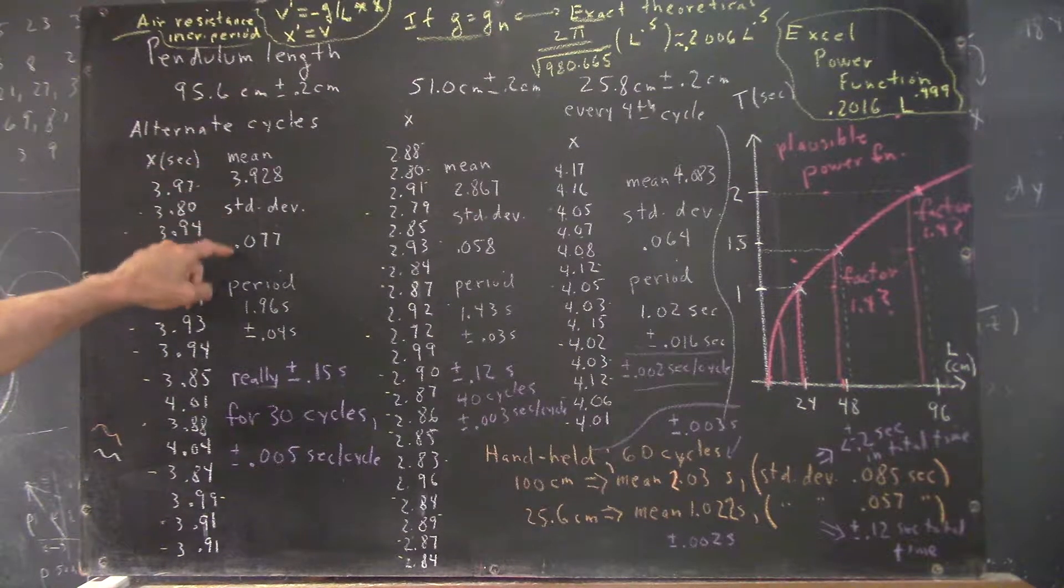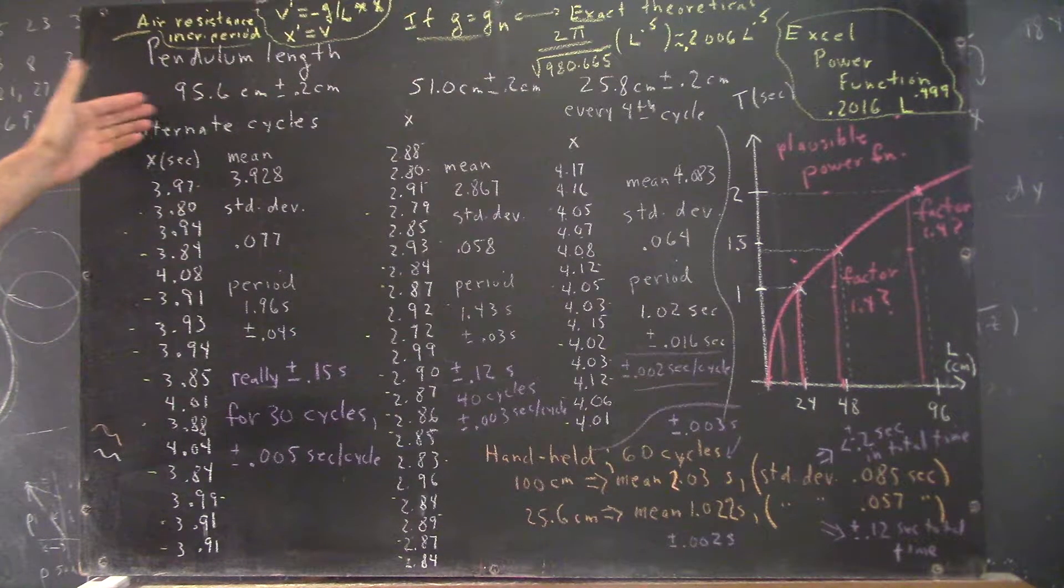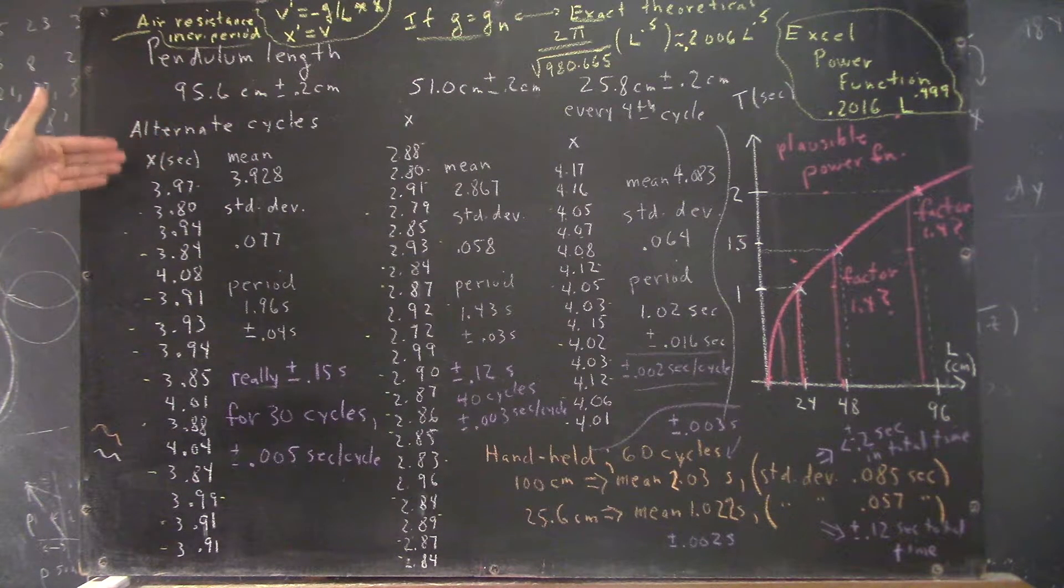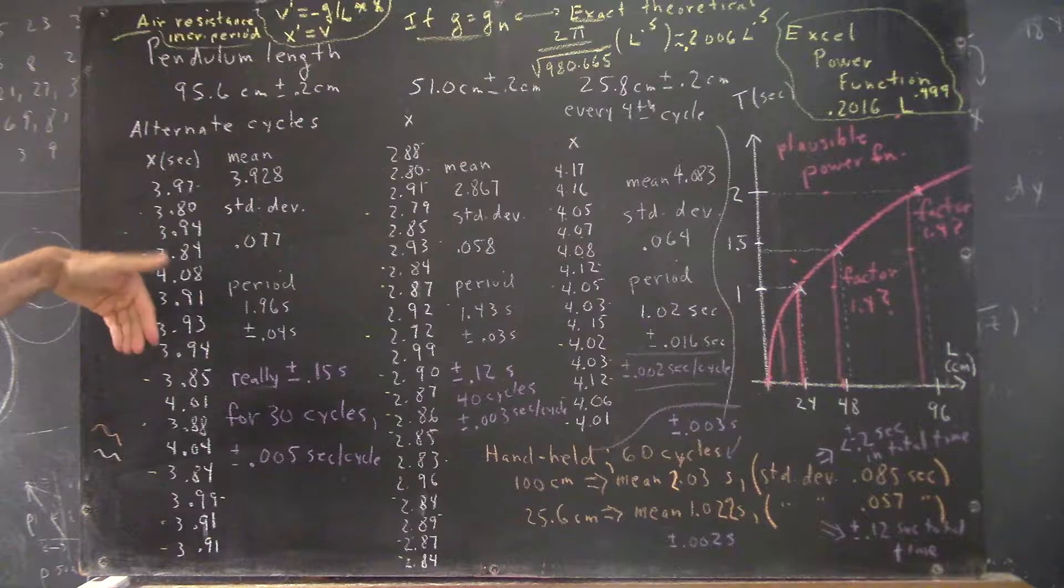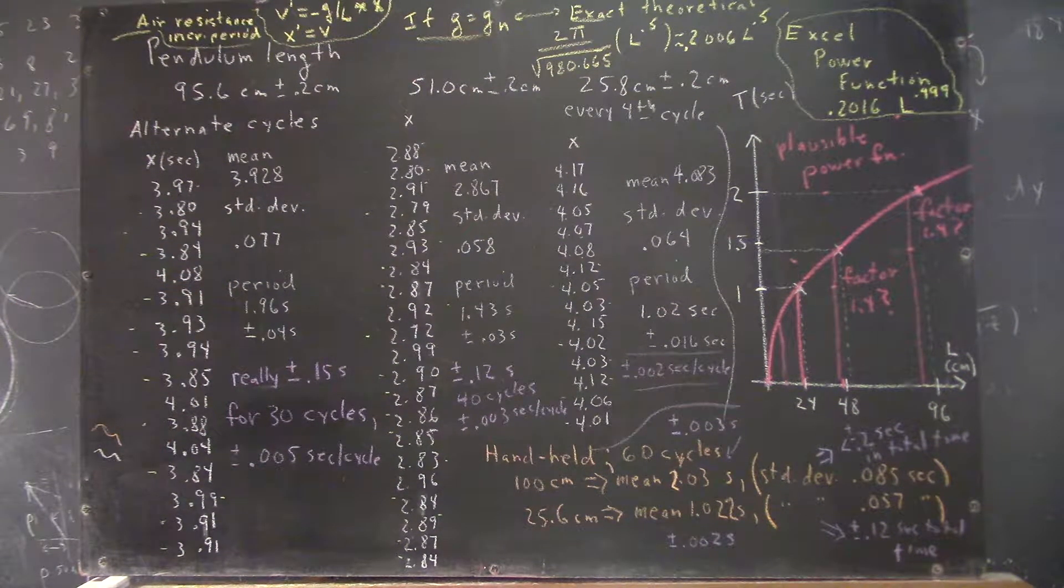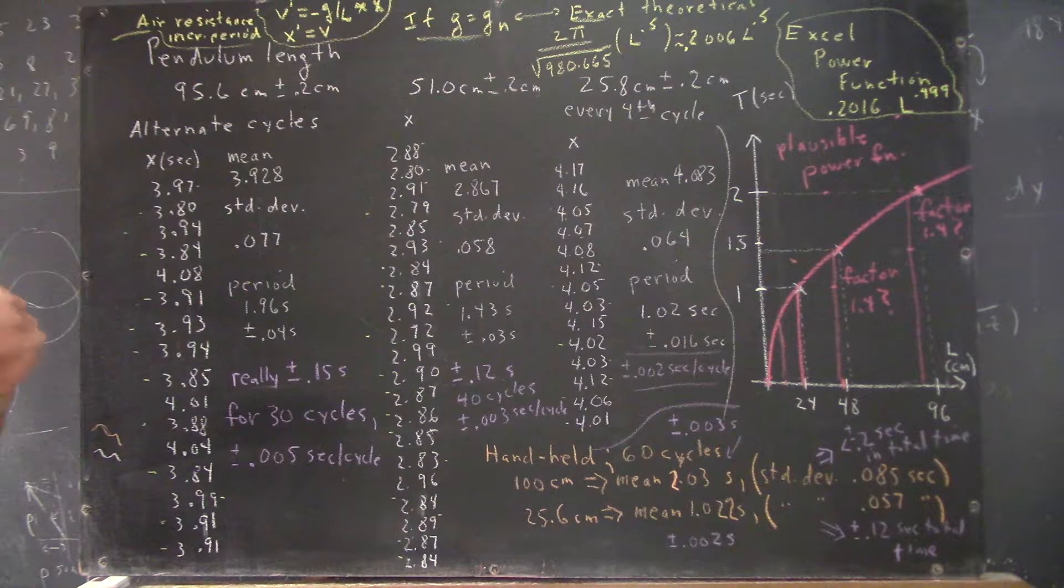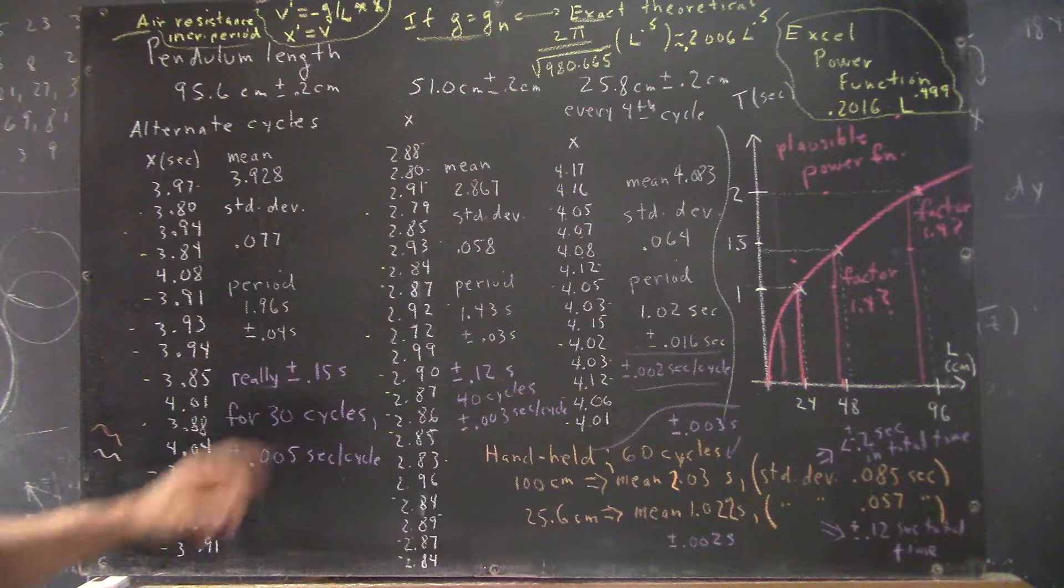We calculated the mean and standard deviation of these quantities. We took half the mean because each of these intervals was for two cycles. We took half the mean to get the mean for one cycle, half the standard deviation. We said, okay, we're comfortable saying the period is 1.96 plus or minus 0.04 seconds.